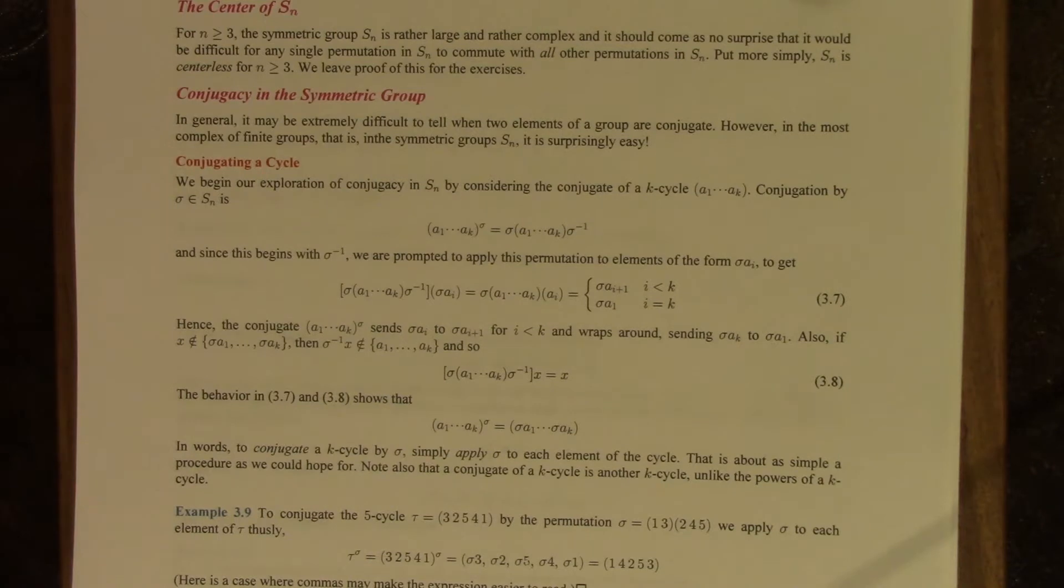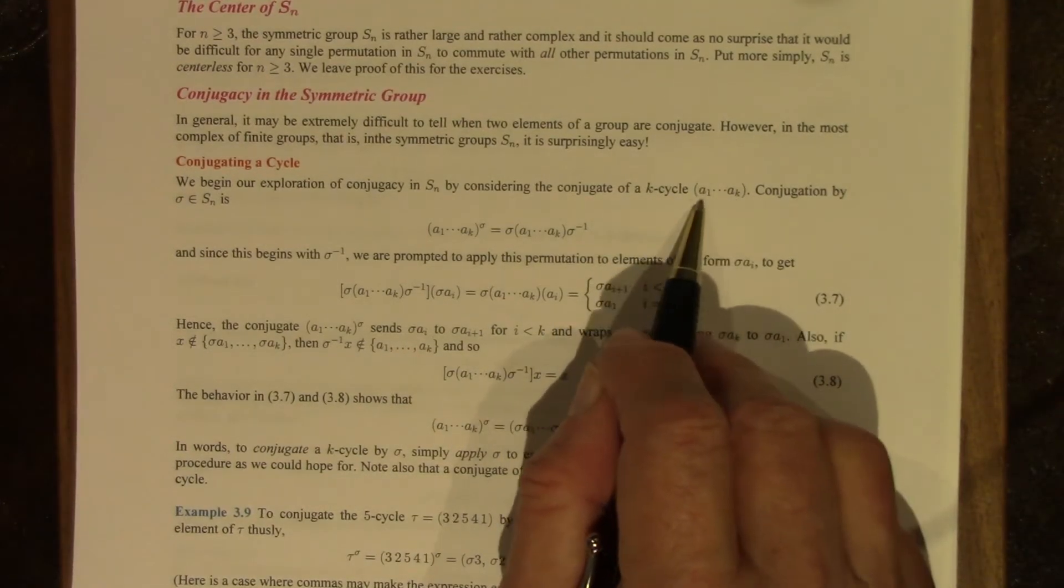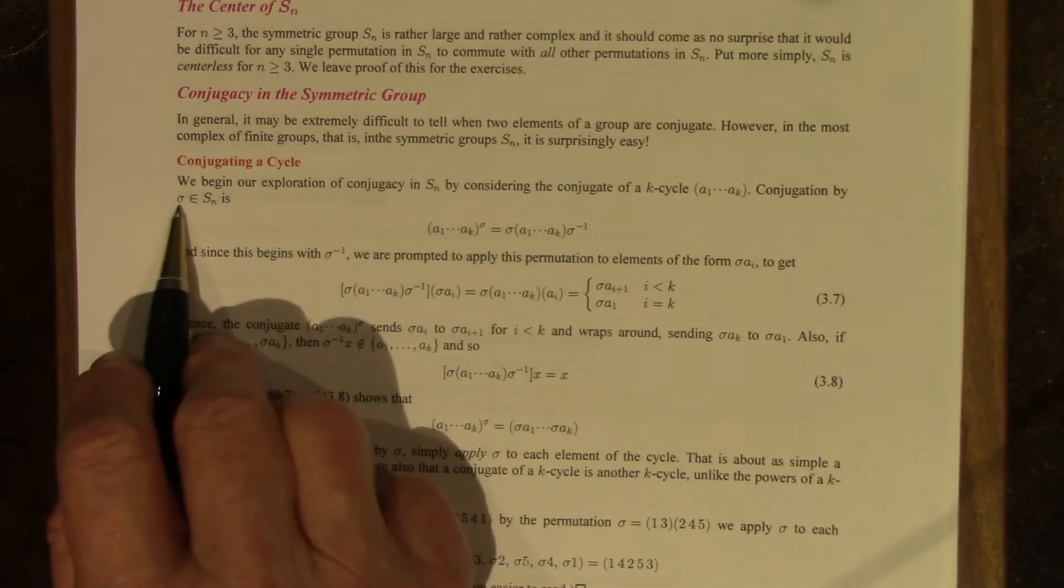So let's start our journey. Where would we start determining conjugacy, how to tell when two permutations are conjugate? A place to start is by conjugating some permutations and seeing what they look like. And the place to start that is with the simplest types of permutations, namely cycles. So let's say we have a K cycle, A1 through AK, and we want to conjugate it by sigma.